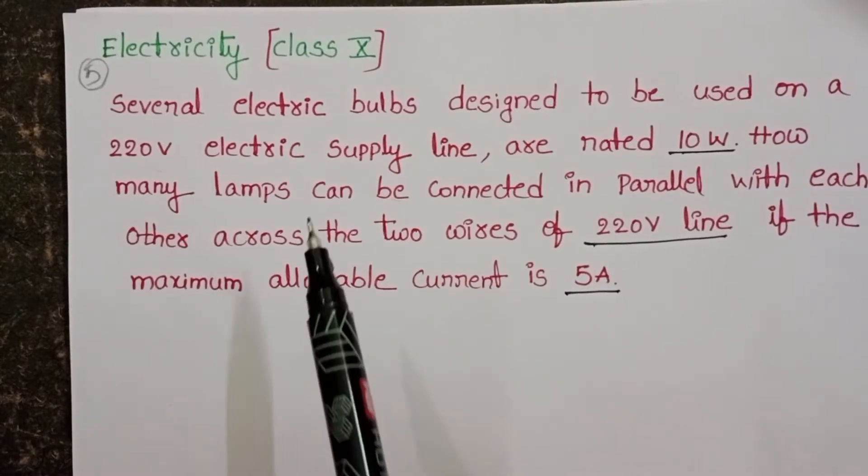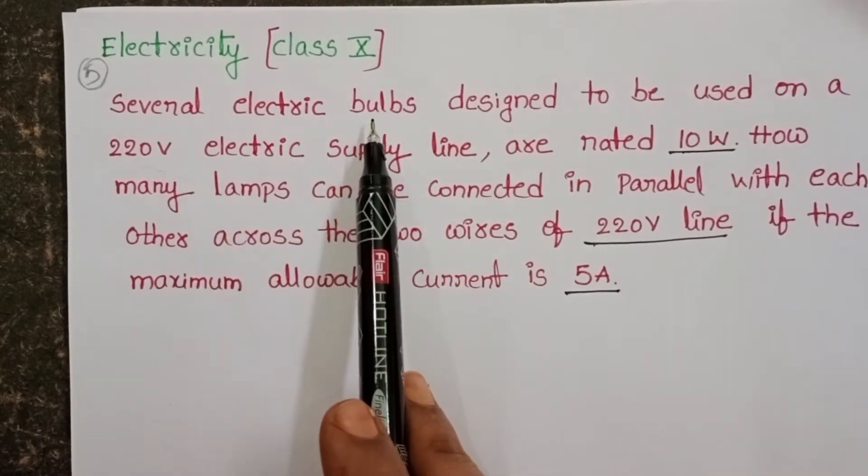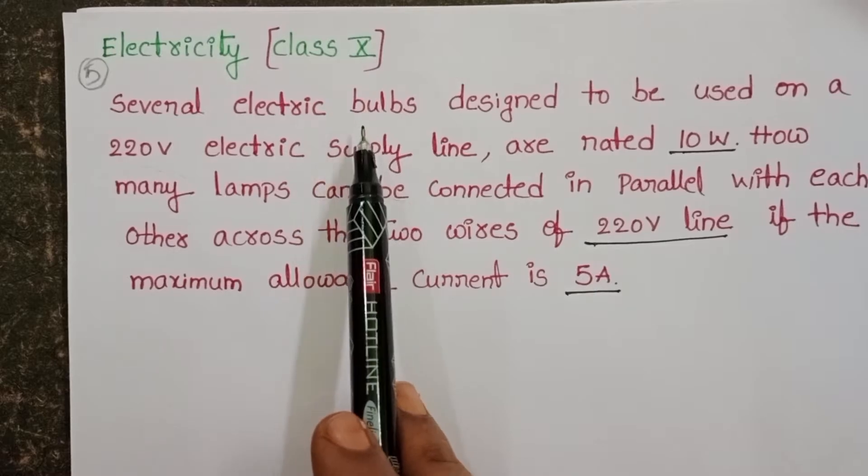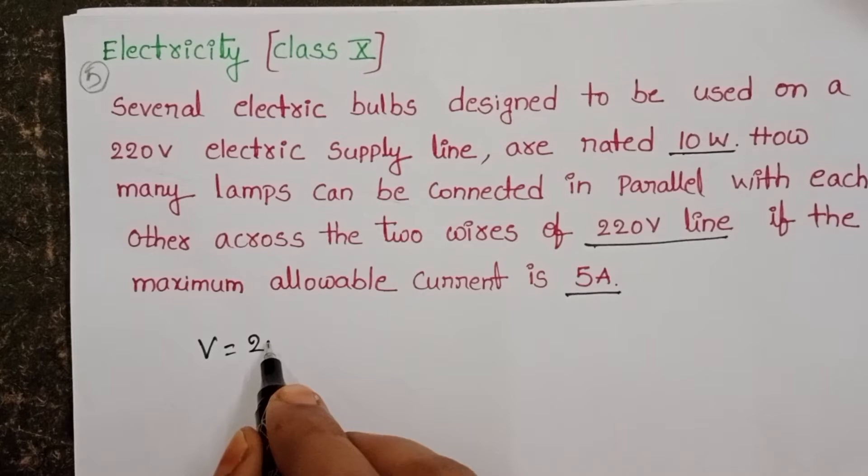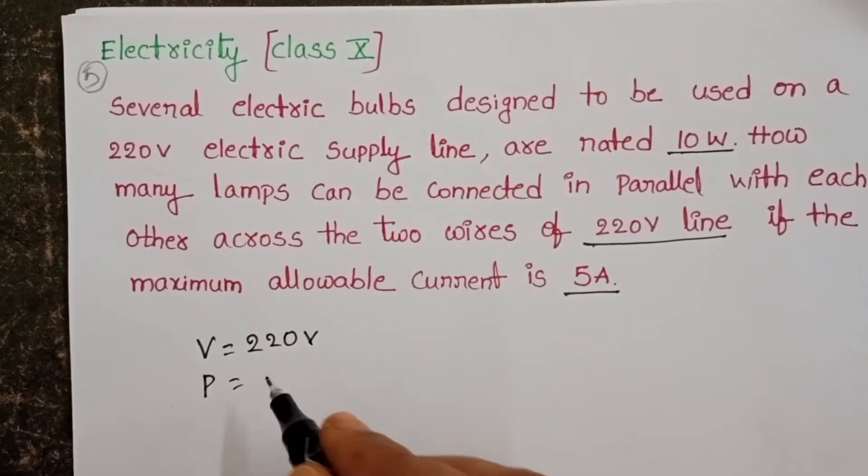In the given question, we have to connect several electric bulbs in parallel. But we don't know the resistance of each bulb. The given rating of the bulb is 220 volts and power is 10 watts.